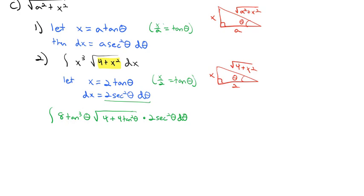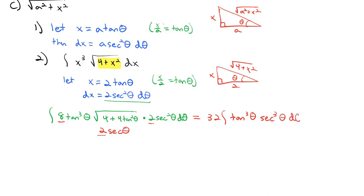Factoring out 4 under the square root: the square root of 4 is 2, and 1 plus tangent squared equals secant squared, so the square root simplifies to 2 secant theta. Multiplying all the numbers together — 8 times 2 times 2 equals 32 — we pull the 32 out front and are left with 32 times the integral of tangent cubed theta times secant cubed theta d theta.